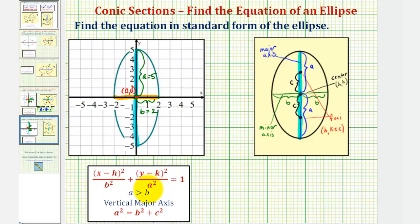When we have a horizontal major axis, A squared, the larger denominator, is under the X part of the equation.